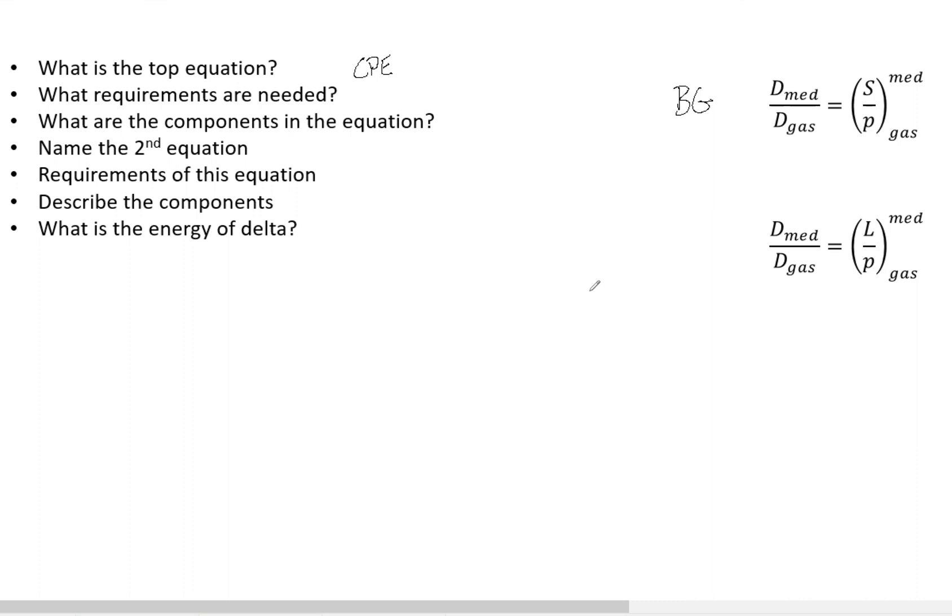This neglects delta rays, that is electrons that cause ionizations themselves created in the cavity, and it also requires energy of secondary electrons to be deposited in the cavity, implying a large cavity.